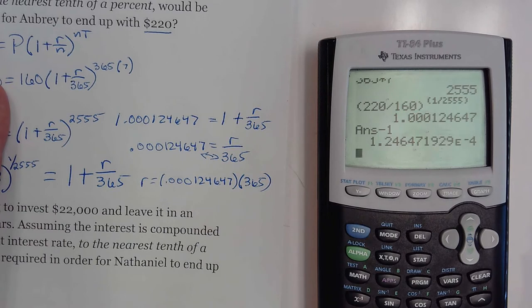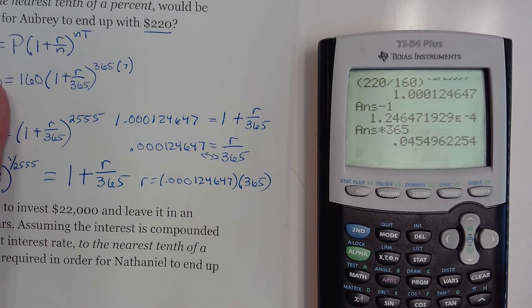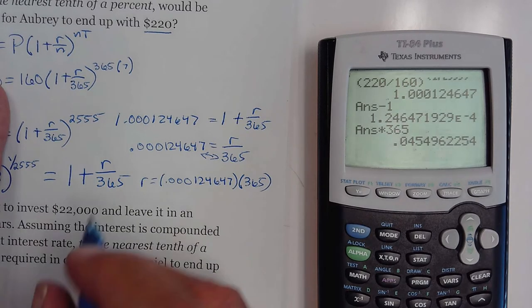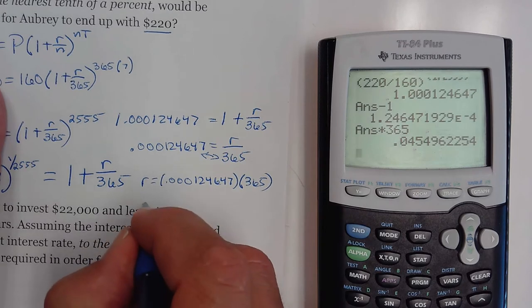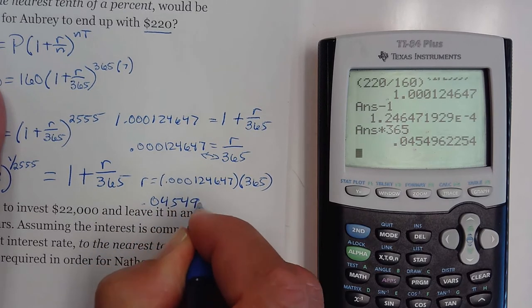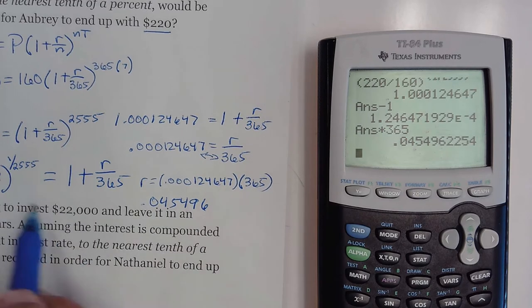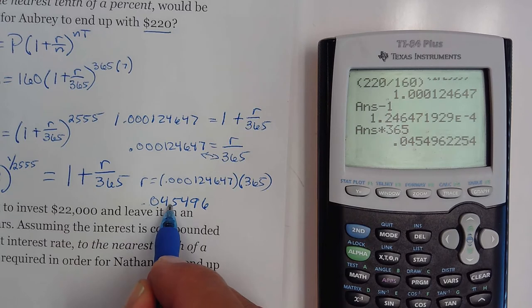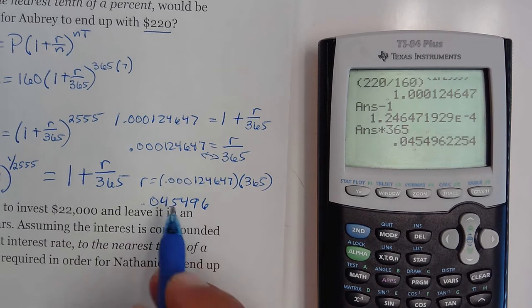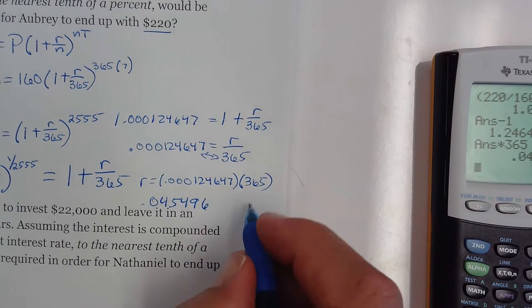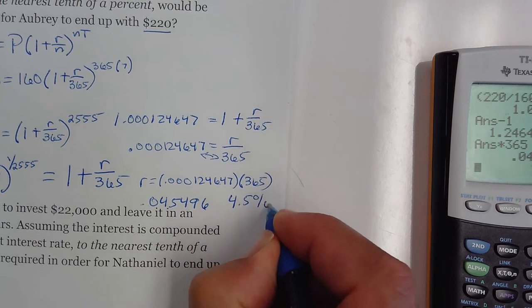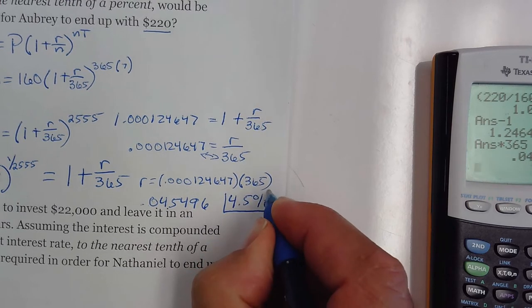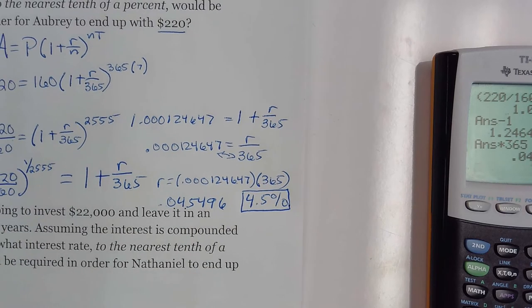So I've subtracted the one, and now I'm going to multiply by 365. The rate in decimal form is 0.045496. We need to change that to a percent, so we're going to bump it over two spots to the right. So it looks like, to the nearest tenth of a percent, Aubrey is going to need to have the account paying four and a half percent interest.